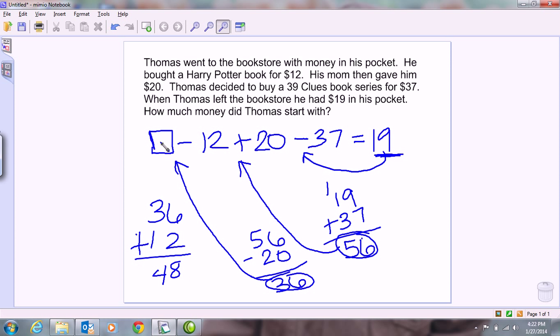And that 48 is going to go in our box. So we will learn that Thomas started with $48 in his wallet before he went to the bookstore. An easy way to check this problem and check your math to see if you're right is to start at the front and go forwards.